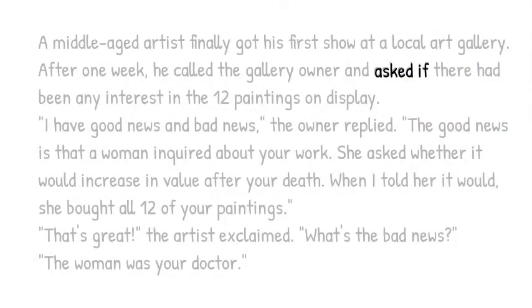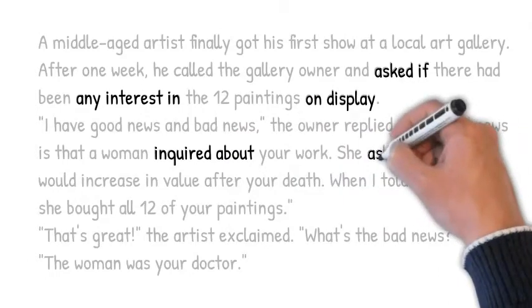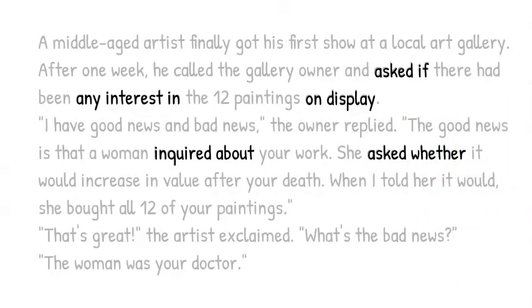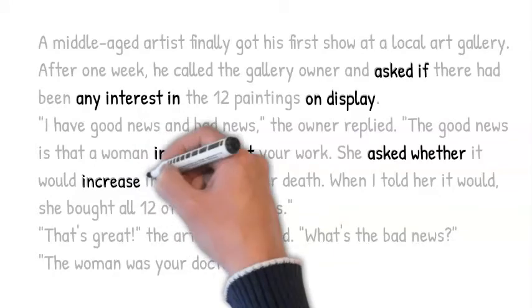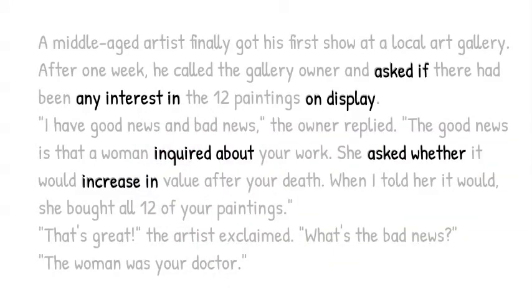The verb ask is with the conjunction if. The noun interest has the determiner any before it and the preposition in after it. The noun display is used with the preposition on. The verb inquire is used with the preposition about. The verb ask is again used with a conjunction, this time whether. And finally, the verb increase is with the preposition in. But we need a little more to be able to complete the colligations.